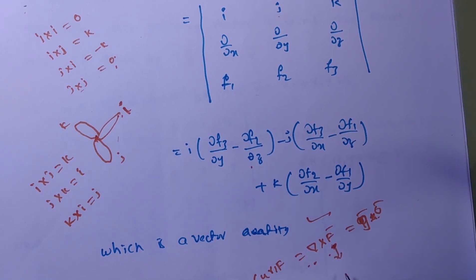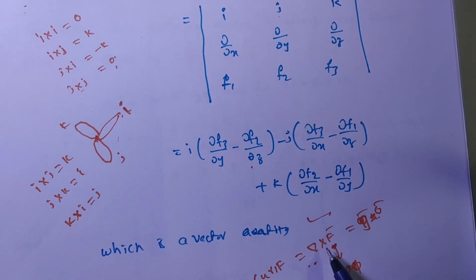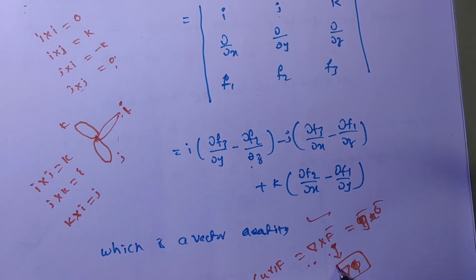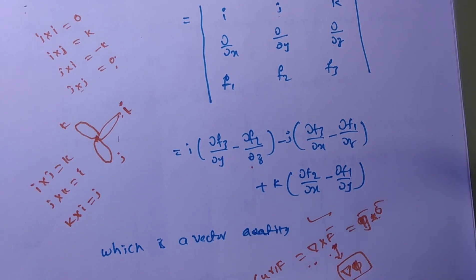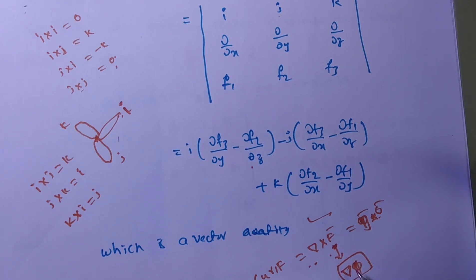Also, if del cross f̄ equals zero, there exists a scalar point function φ such that del φ equals f̄. Here φ is called the scalar potential function. In problems they may ask: given that the vector is irrotational, find the scalar potential function, or show that the vector is a conservative field.